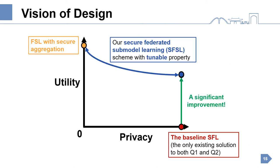To address the privacy and accuracy issues while enjoying efficiency, we propose a secure federated submodel learning scheme with tunable privacy, or SFSL for short. At the same privacy level as the baseline, our design greatly improves the utility. Further, our scheme allows clients to improve utility by degrading privacy and can reach the extreme point with the best utility, that is federated submodel learning with secure aggregation.